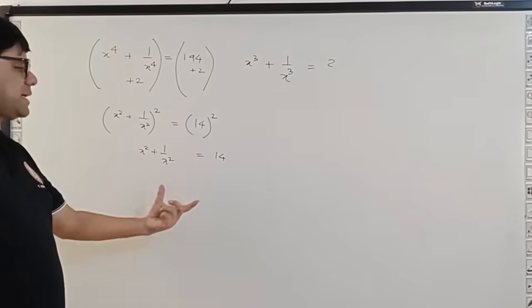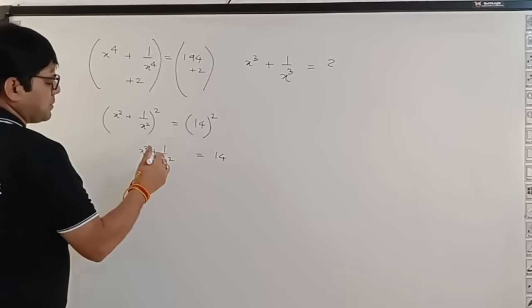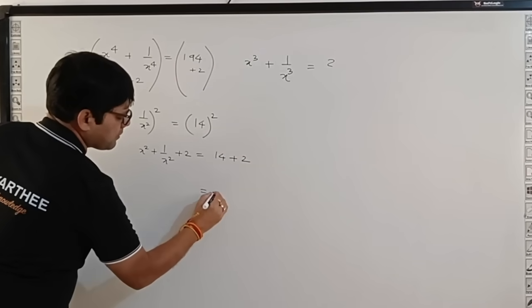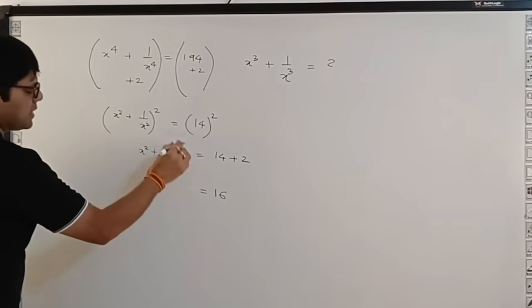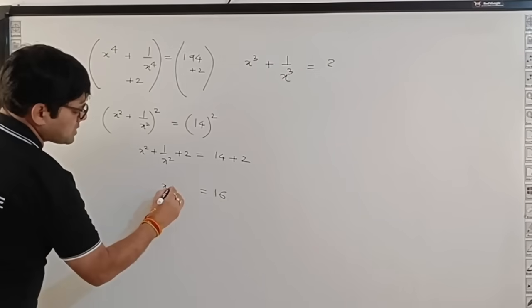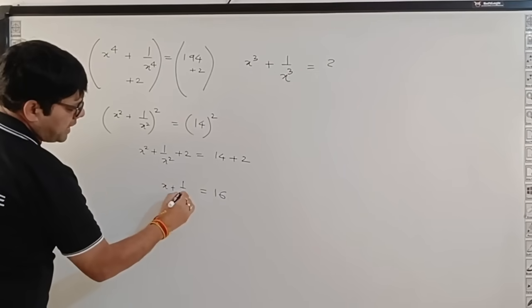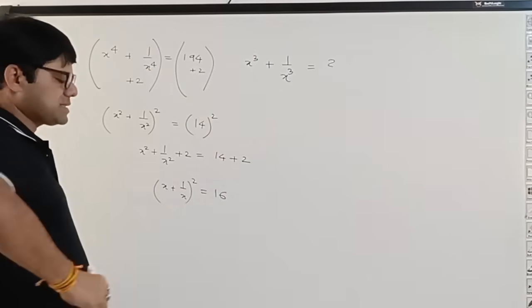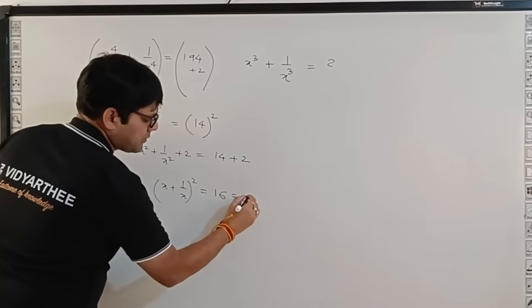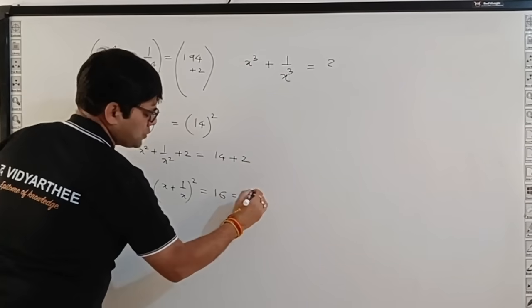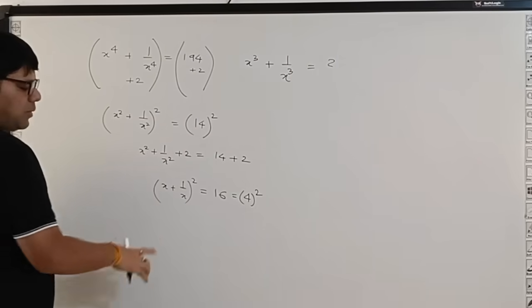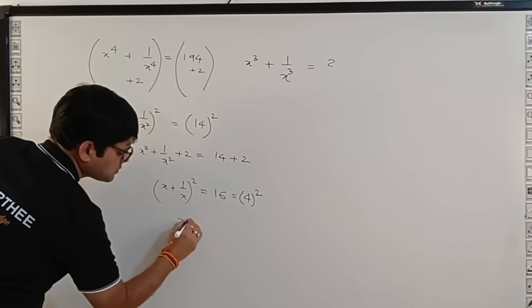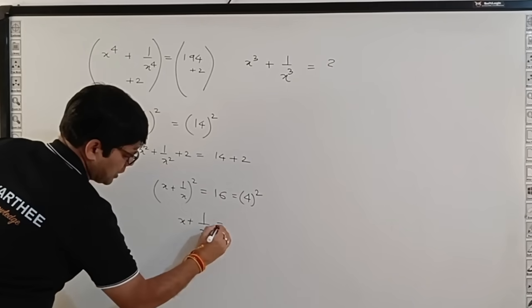We can follow the same process of what we followed before. By adding 2 to both sides, what we get is 16 here, and here we get (x + 1/x)^2. Now what is 16? 16 can be expressed as 4^2. Comparing what's inside the brackets, you get x + 1/x = 4.